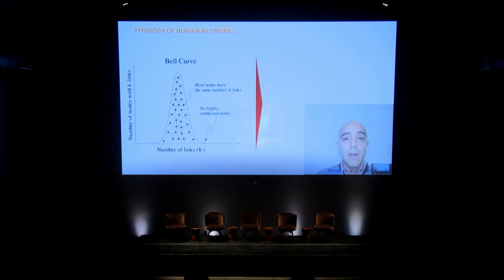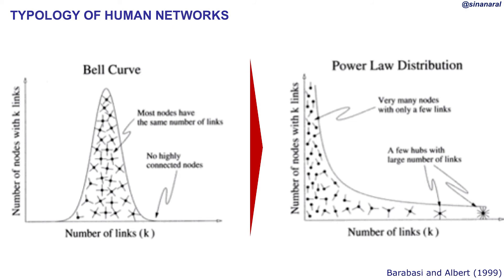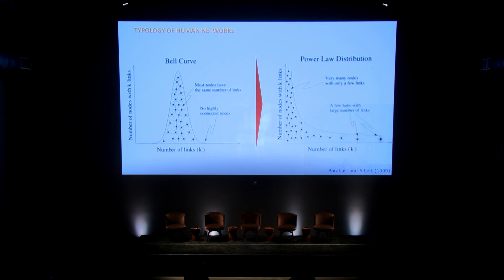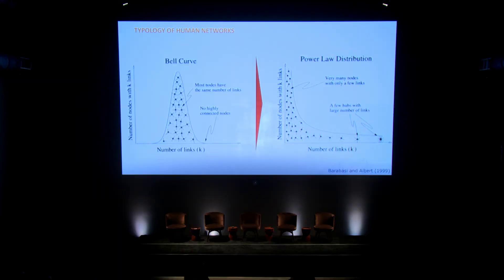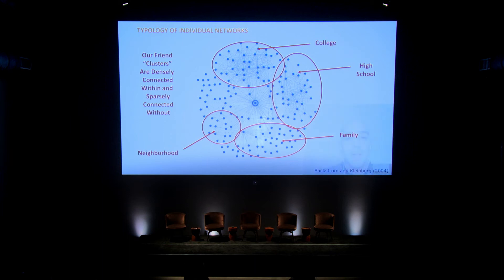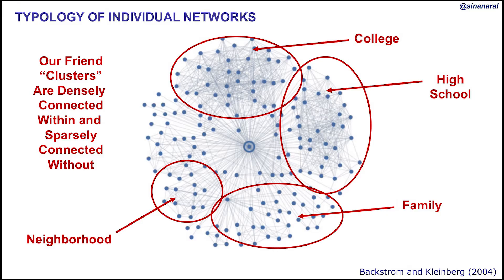Another consequence of high clustering and low path length is the degree distribution. You might expect a bell curve — most nodes having an average number of links — but given this structure, what we actually have is a power law degree distribution. There are very many nodes with only a few links, and only a few hubs with a large number of links — the highly popular people, the people who know everyone. This is visible in typologies of individual networks: college, high school, family, and neighborhood clusters.